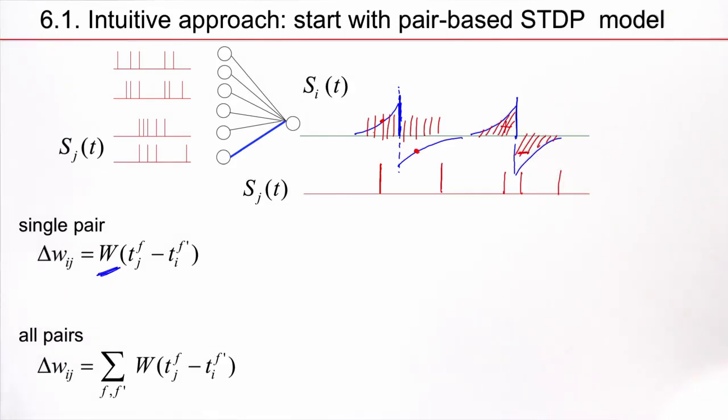And this part is counted positive and this part is counted negative. So, the relevant quantity is something like, I take this window W of t_j^f minus t_i^f. So let's call this difference, the timing difference s. What matters, what drives it upwards or downwards, is the integral W of s ds, which corresponds to the positive surface minus the negative surface.